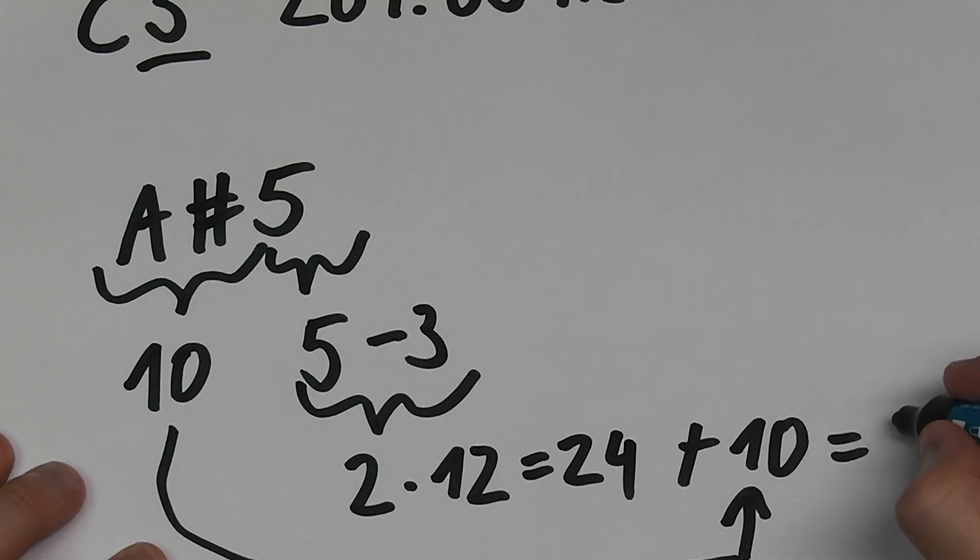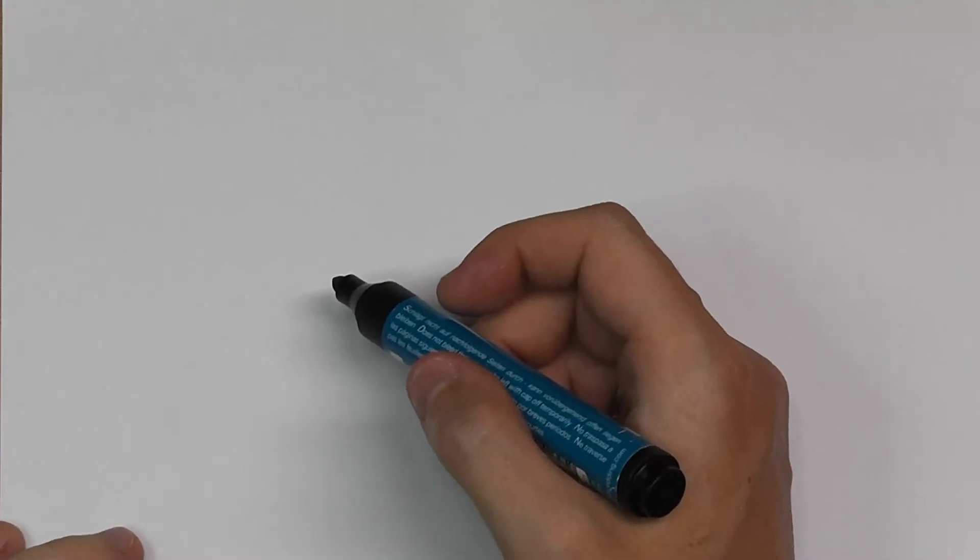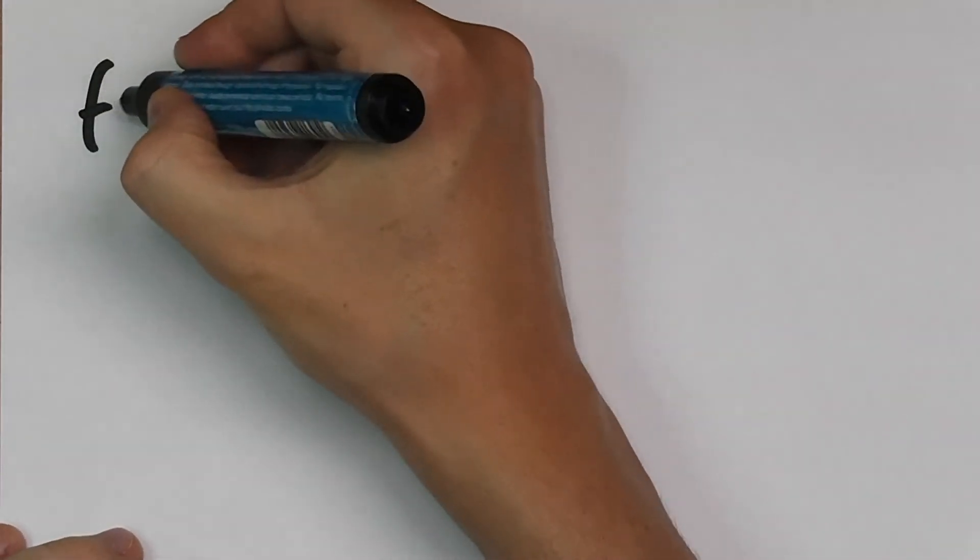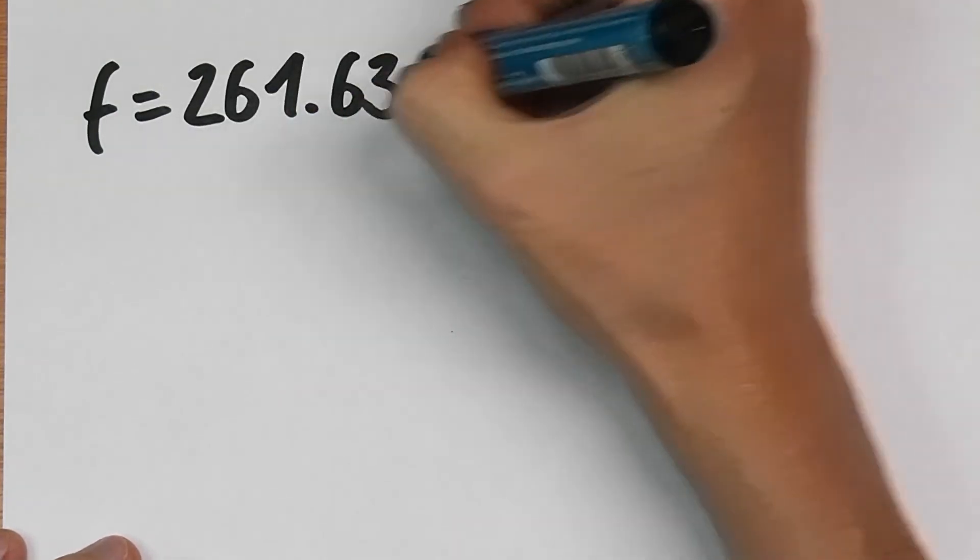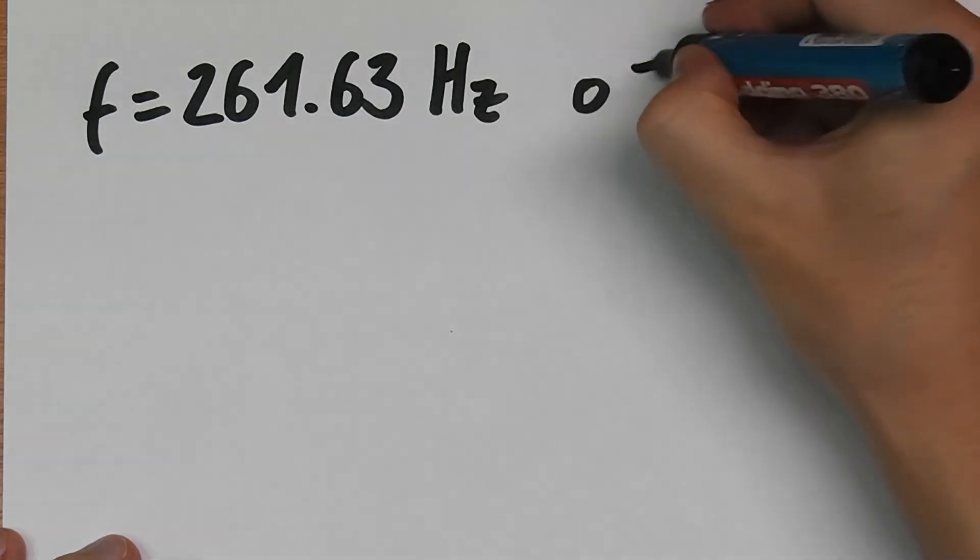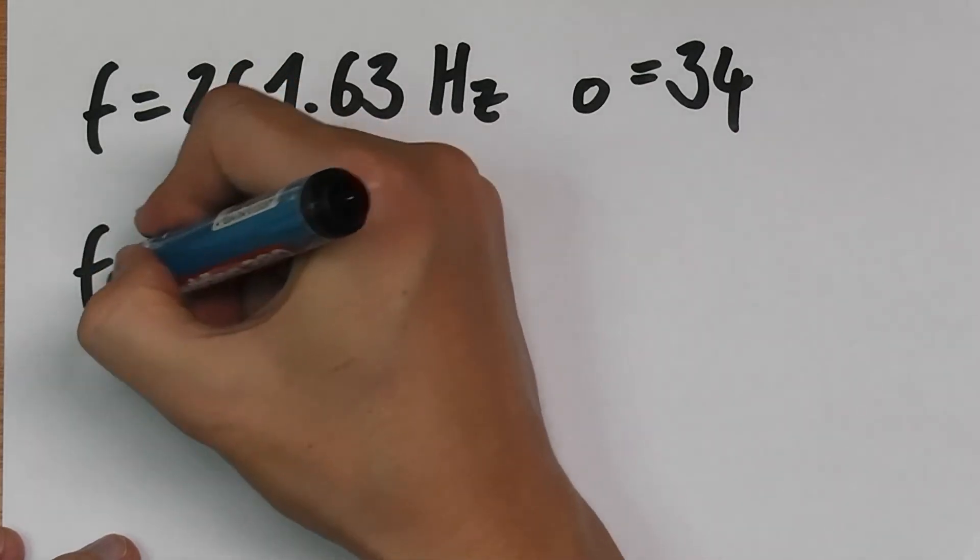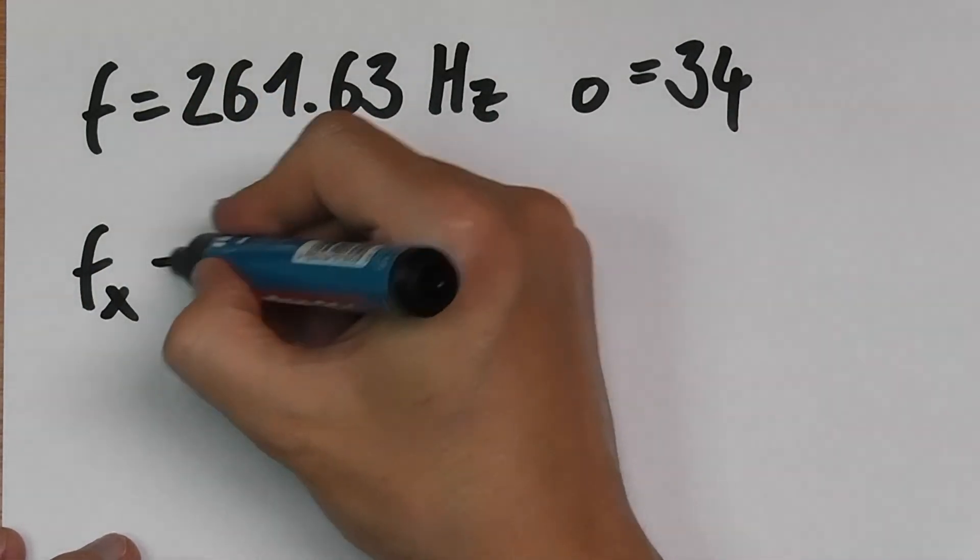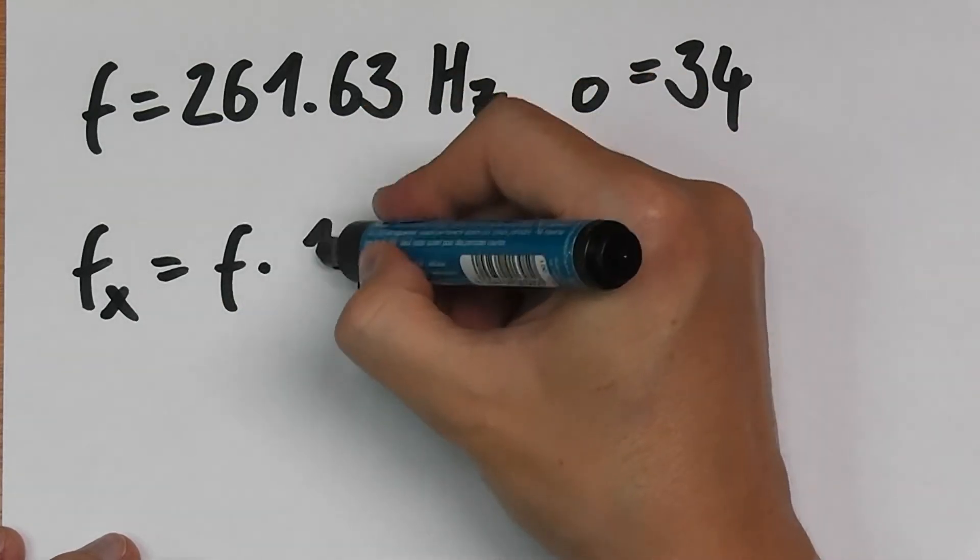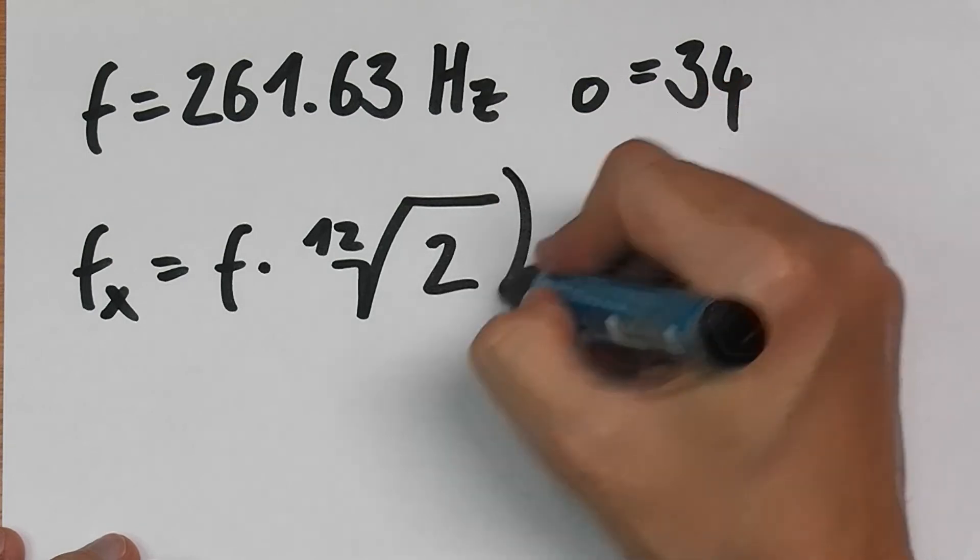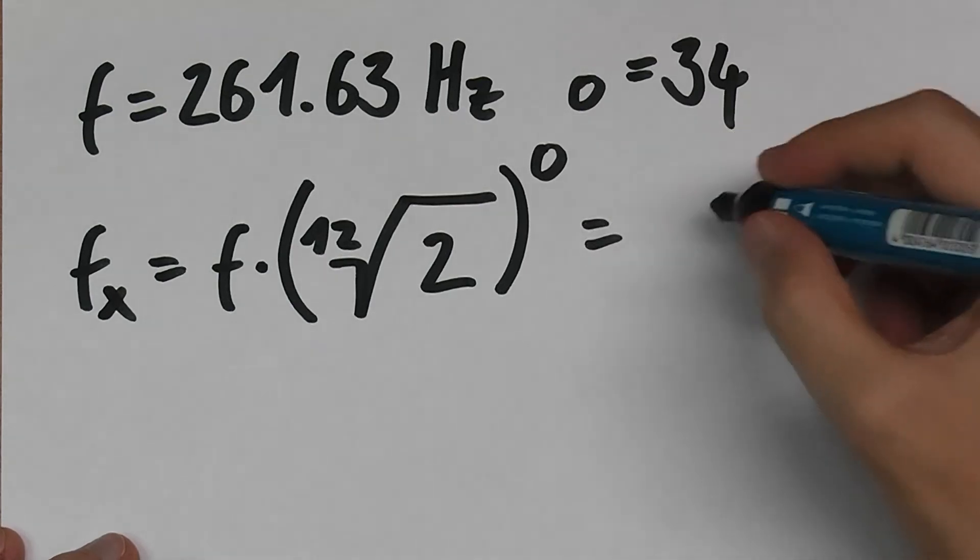So we need to calculate the frequency for the 34th note. To recap that again, we have a base tone frequency of 261.63 Hertz and we have a note offset of 34 that we want to calculate. We're looking for the frequency of that note 34, which we can get by multiplying the base frequency times the 12th square root of 2 to the power of O. In our case this will be f times the 12th square root of 2 to the 34th.